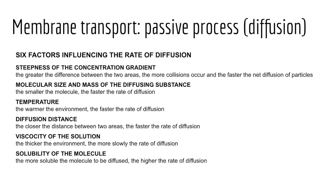Fourth, diffusion distance: the greater the distance over which diffusion needs to take place, the longer it takes. For instance, in patients with pneumonia, fluid collects in the lungs and increases diffusion distance across the alveoli, slowing diffusion of oxygen into the blood and carbon dioxide from blood back to the lung. Fifth, the viscosity of the solution: the thicker the solution, the slower the rate of diffusion. And finally, the solubility of the molecule: the more soluble the molecule, the higher the rate of diffusion.